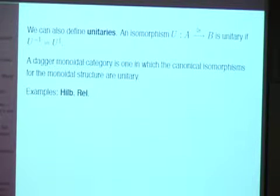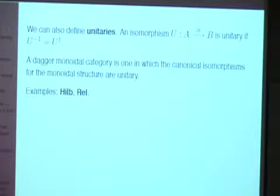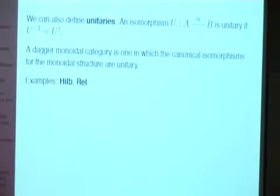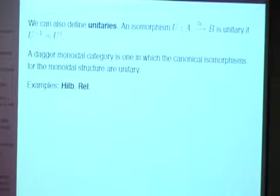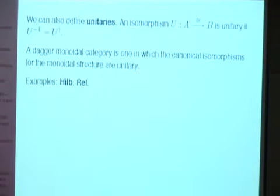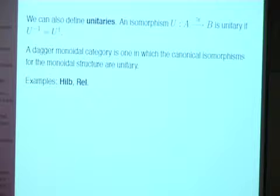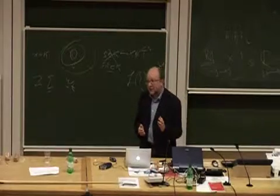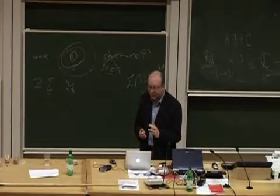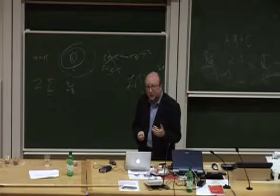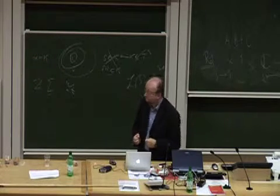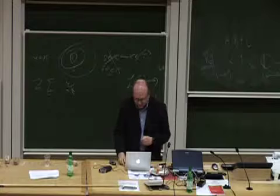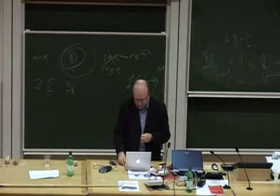A dagger monoidal category is one in which the canonical isomorphisms for the monoidal structure are unitary. One can do the CPM construction just at this level of structure. But in some sense we haven't got to the real meat yet — we haven't said anything yet which distinguishes between a classical setting and a quantum setting. It could be either. So we're now going to raise the stakes and get onto things that are more distinctively quantum. I want to talk now about entanglement again, Bell states, and compact categories.